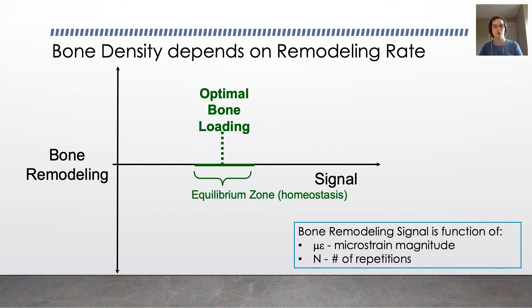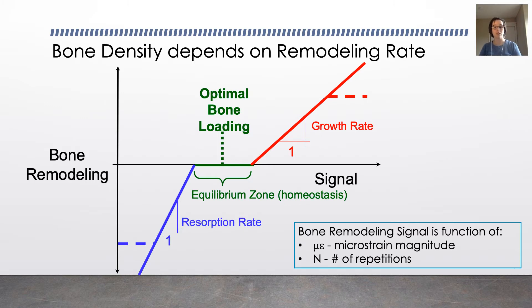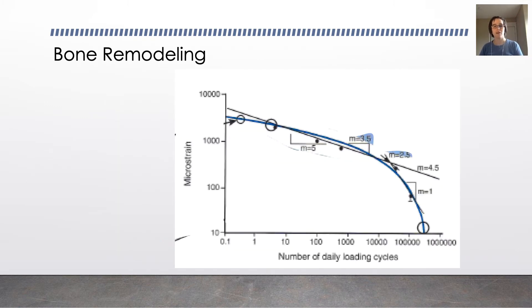If you move to the right on the signal, you induce bone growth, and the bone will grow at approximately a linear rate. If you stop loading, either reduce the magnitude of the strain or the number of repetitions, you'll move to the left and bone will be resorbed. So it will disappear. And that's dependent on the microstrain and the number of loading cycles the bone body experiences each day.